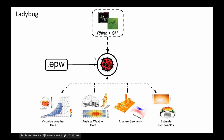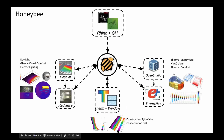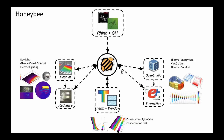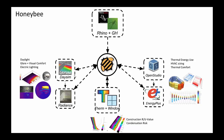Honeybee connects out to two key engines for daylight modeling. Those are the open-source physics-based rendering engine called Radiance, which we use to evaluate daylight and glare with deep simulations. And then there's DAYSIM, which is mostly a set of libraries and tools that help you run daylight simulations for an entire year and coordinate that. We're going to cover the daylight stuff in workshop four.